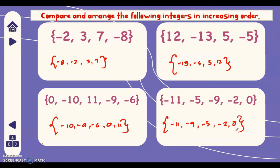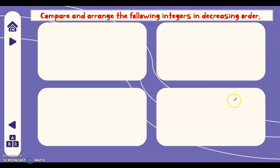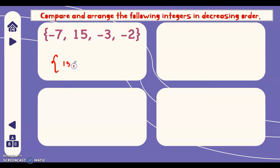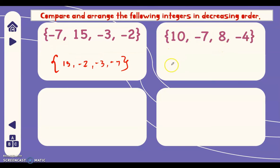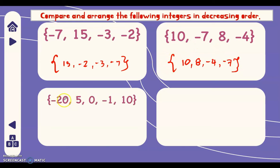Let's proceed with decreasing order. When you say decreasing order, that means from highest to lowest number. In the first example, we start from the highest positive number: 15 is the highest, then negative 2, then negative 3, then negative 7, which is the smallest. Next: 10, negative 7, 8, and negative 4. The highest is 10, then 8, then negative 4, then negative 7. Next example: look at the positive numbers first. We have 10, then 5, then 0.